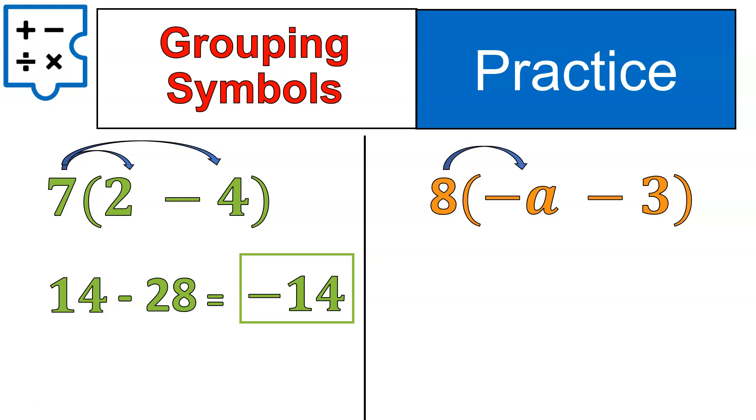Now let's look at this one with the variables. We have 8 times negative a. That will give us negative 8a. We also have 8 times negative 3, which gives us negative 24. This is our final answer in simplest form.